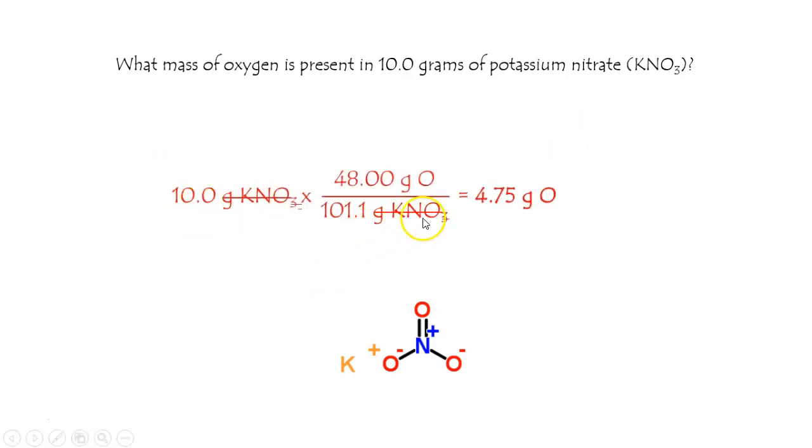Every 101 grams of KNO3 contains 48 grams. That's your percent right there as a fraction. Multiply that by your 10 grams, and that makes sense. A little less than half, or 4.75 grams of oxygen are present in every 10 grams of potassium nitrate.